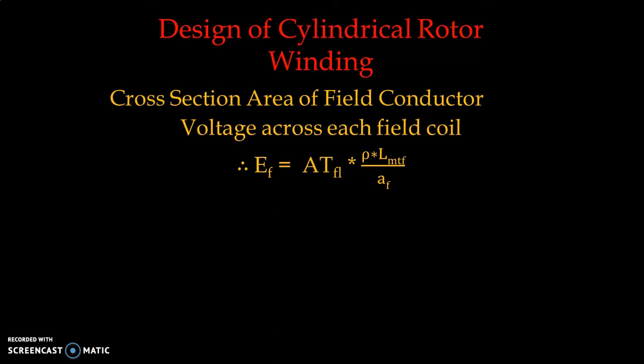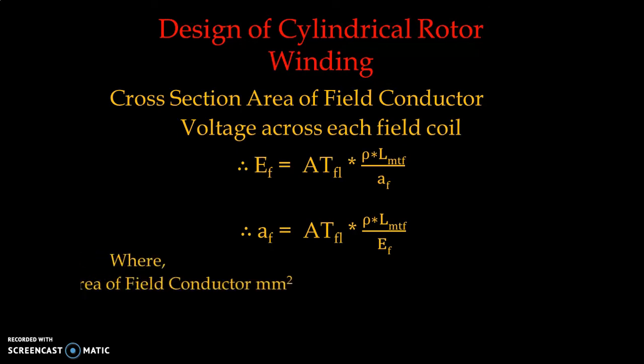ATfl is the full load field ampere-turns already estimated. ρ is the resistivity of copper, and Lmtf has been calculated with the empirical formula. Ef — the voltage across each field coil — was found as (0.8–0.85)×Ve/P. Using this equation, the cross-section area of the field conductor Af (in mm²) is straightforwardly calculated. The resistivity of copper is used since the conductors are typically copper.